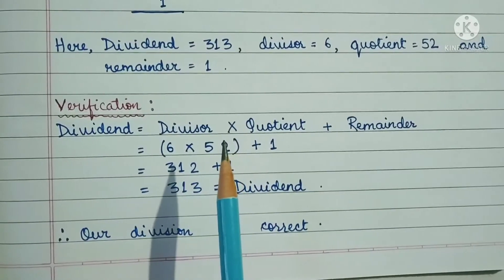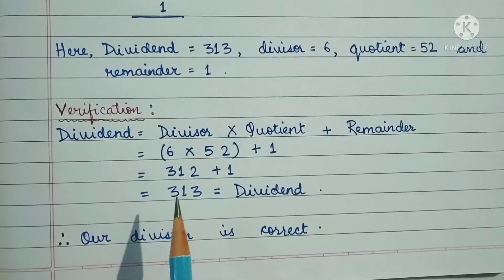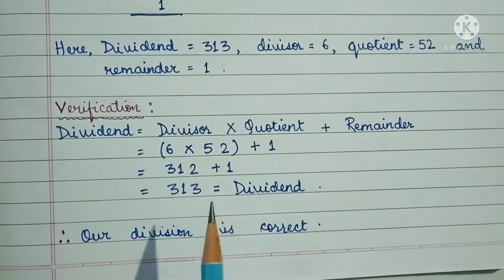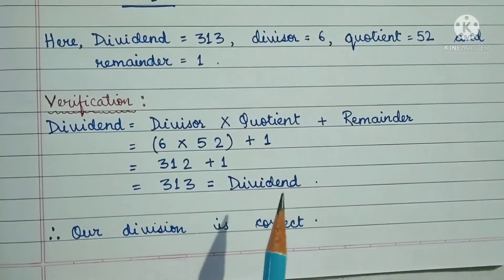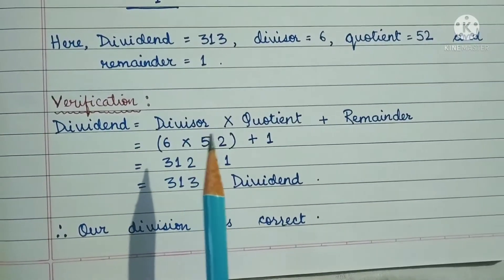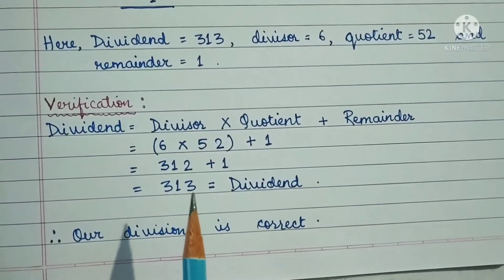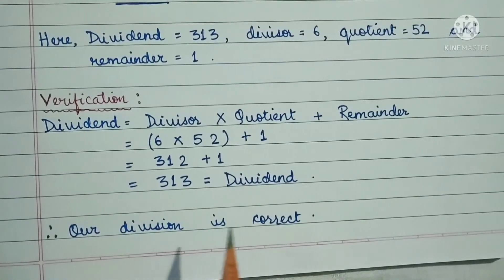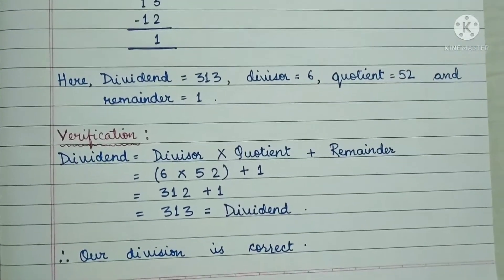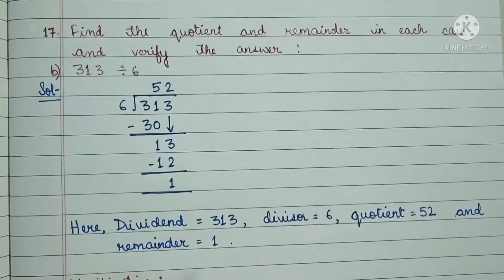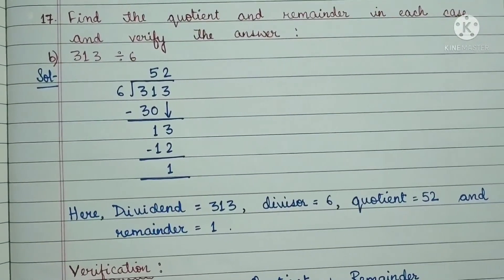This 313 is equal to the dividend. This shows that our division is correct, because divisor × quotient + remainder equals the dividend. Whenever divisor × quotient + remainder equals the dividend, our division is correct. In this way we verify our division. Thank you for watching.